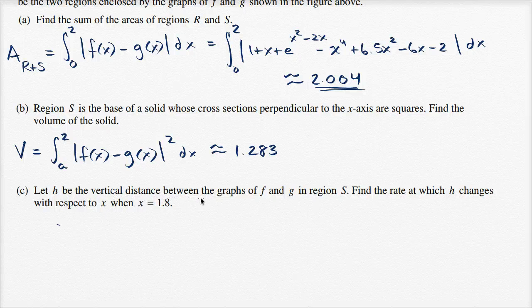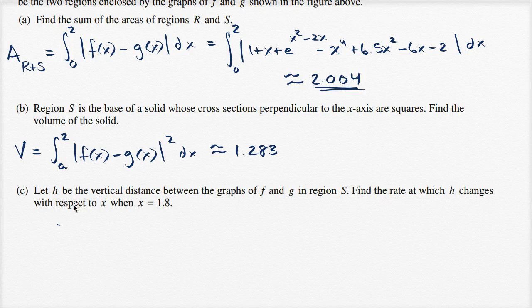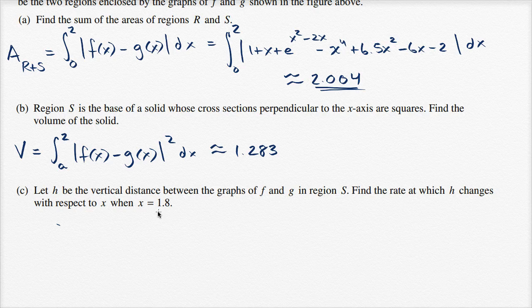Let h be the vertical distance between the graphs of f and g in region S. Find the rate at which h changes with respect to x when x is equal to 1.8.